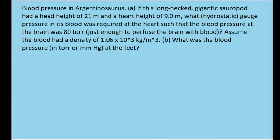In this problem, we're given a description of a dinosaur. We're told the height of its head and its heart from the ground, and the density of its blood. We want to find the blood pressure required at its heart so that it has 80 torr of blood pressure at its brain.